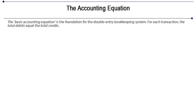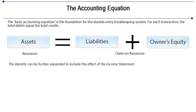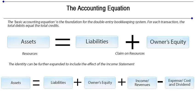The basic accounting equation — assets, i.e. a resource — equals to liabilities plus owner's equity, i.e. the claim on resources, can further be expanded to incorporate the changes in the profit and loss account. The business activities are reflected in revenues earned and expenses paid. Hence, the expanded equation would be: assets equals to liabilities plus owner's equity plus income (revenues) minus expenses, which include cost and dividend.